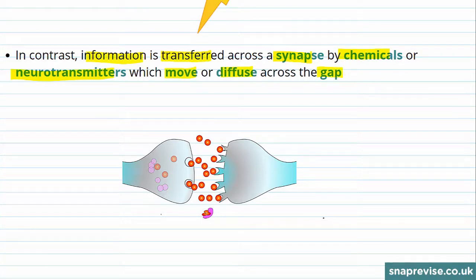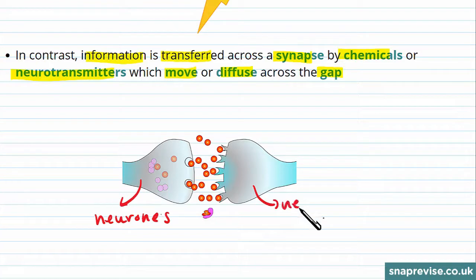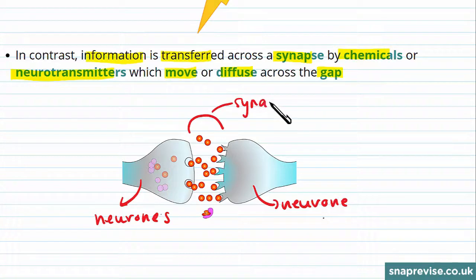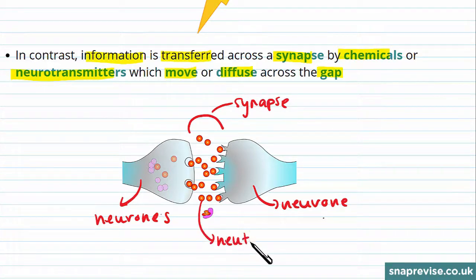In this diagram, this is a neuron and there is a neuron on either side of the synapse. This gap is the synapse, and you can see there are lots of little red dots — these are the neurotransmitters. This means information is first passed along electrically along the neuron, then chemically across the synapse, and then electrically again along the next neuron.